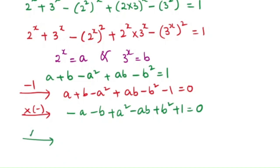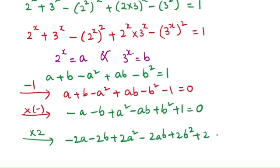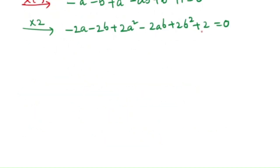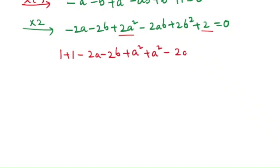Now multiply both sides by 2: -2a - 2b + 2a² - 2ab + 2b² + 2 = 0. We can write 2 as 1 + 1, and split 2a² as a² + a², and 2b² as b² + b², so that we can form perfect square expressions like (a - b)² or (1 - a)².